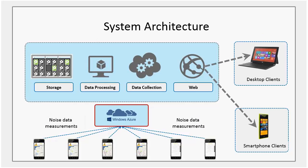Our system architecture uses services from Microsoft Azure. At the bottom, we have a large number of smartphones that measure noise data and share it with the cloud. On the cloud side, we use Azure Storage to store data from the phones, virtual machines to process data, cloud services to receive data from smartphones, and Azure Website service to provide the noise mapping service. Users — both desktop and smartphone clients — can then access the noise mapping service through their browsers or smartphone apps.